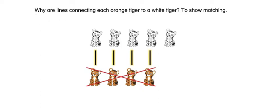Why are lines connecting each orange tiger to a white tiger? To show matching.